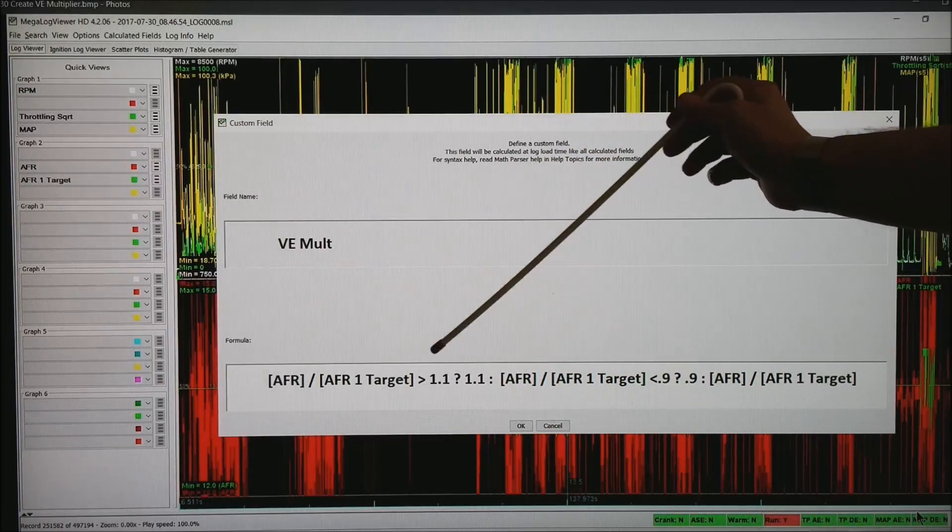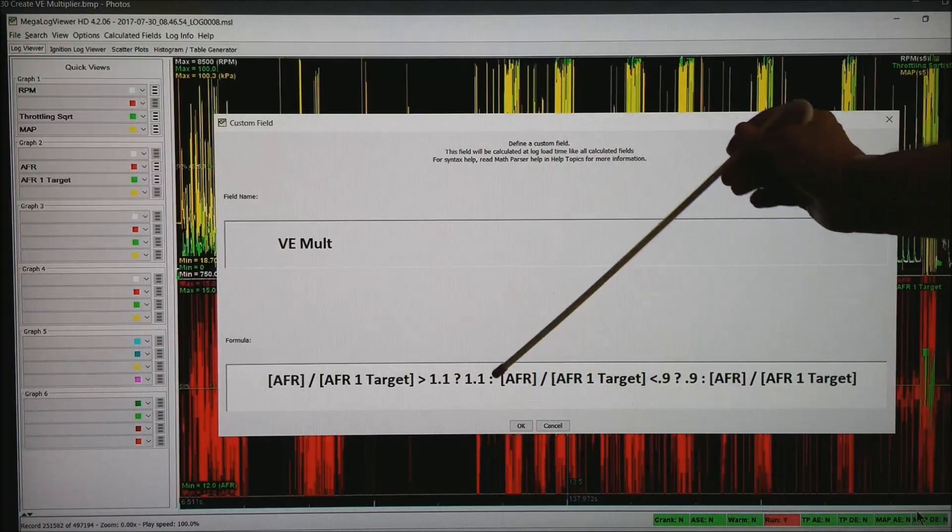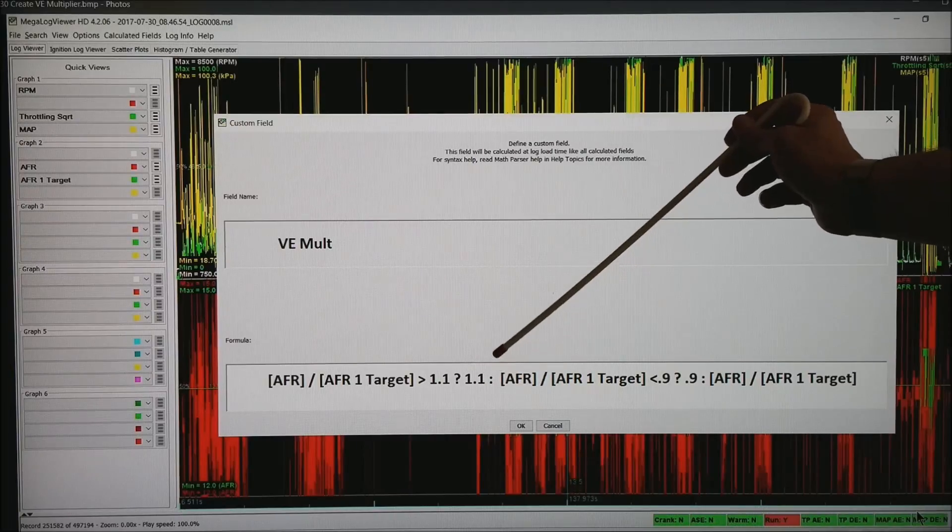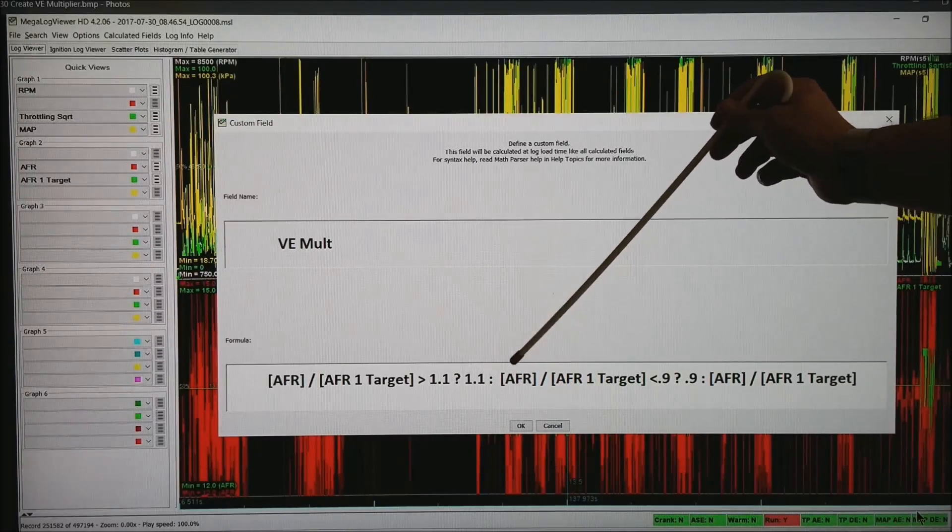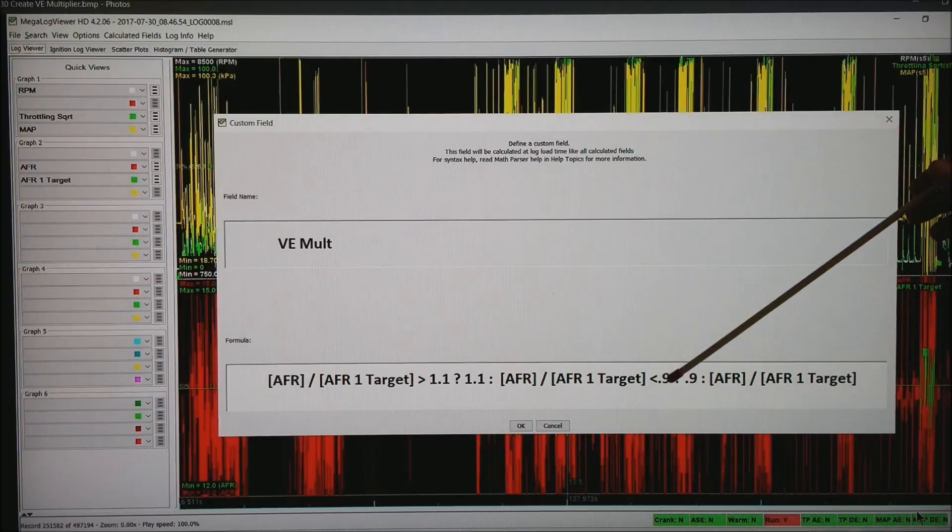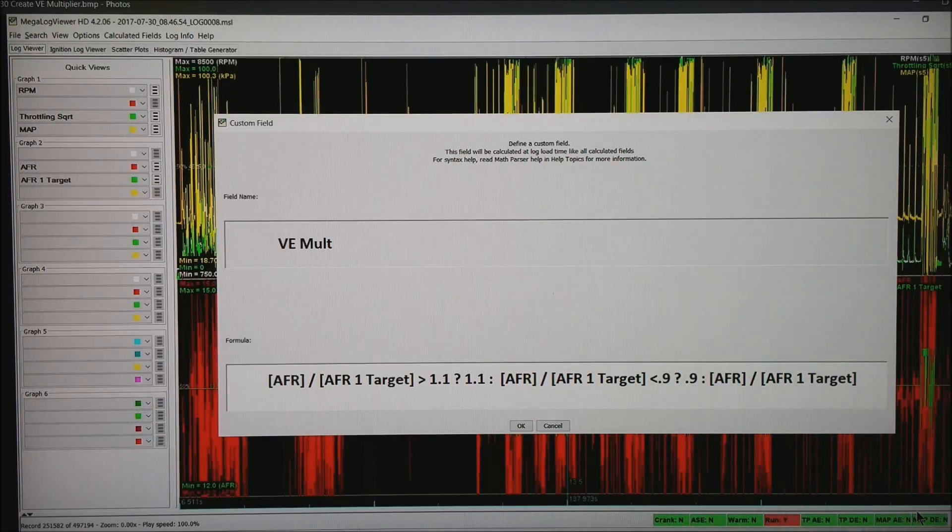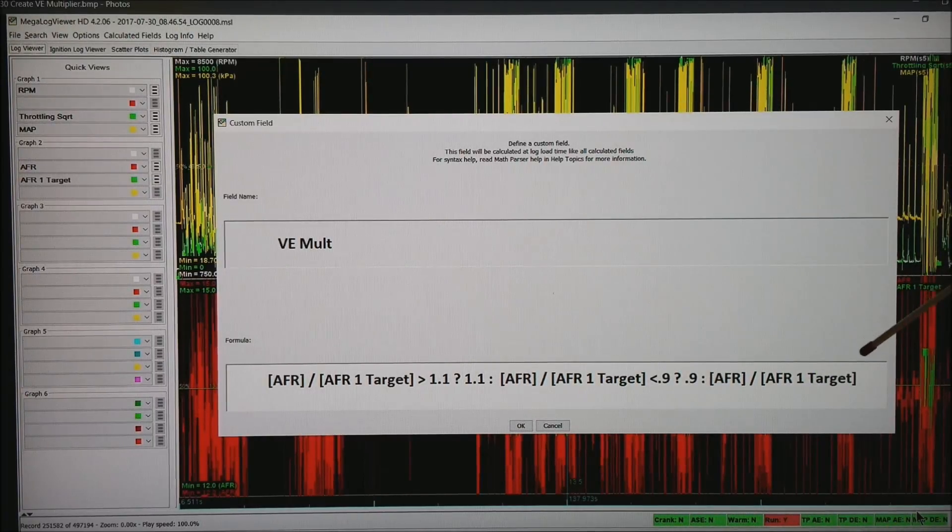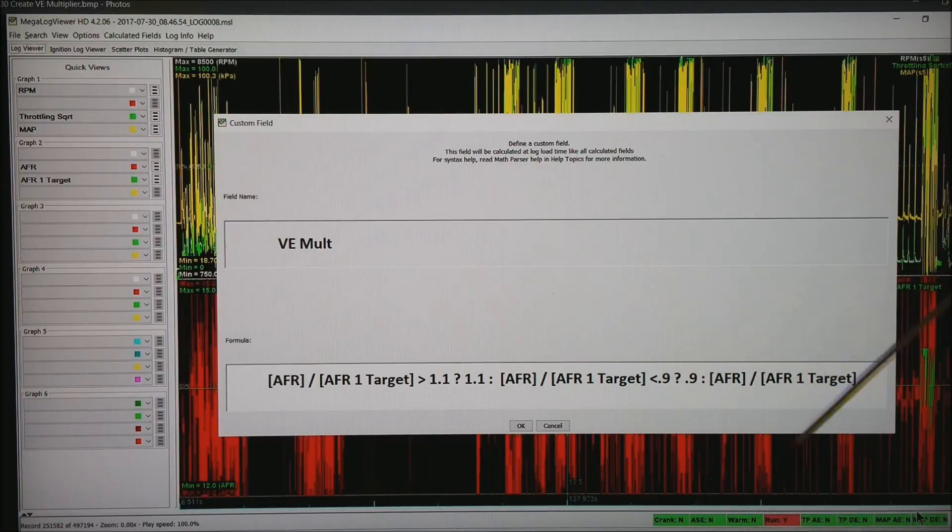If that ratio is greater than 1.1, I want to return a 1.1. Otherwise, if the AFR divided by the AFR target is less than 0.9, I want to do a maximum correction of 0.9. Else, just give me whatever that is in that formula.